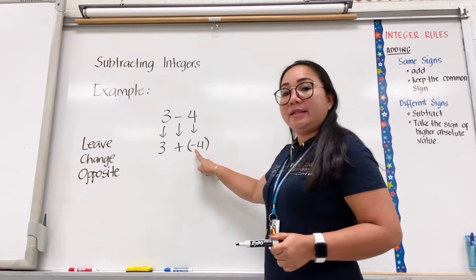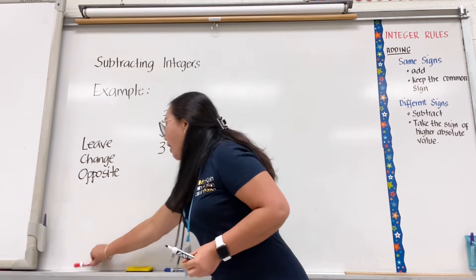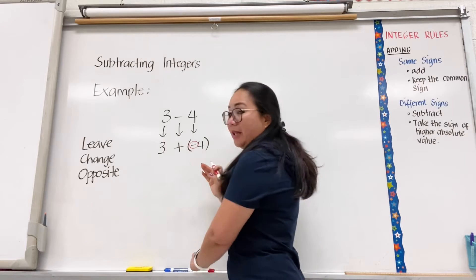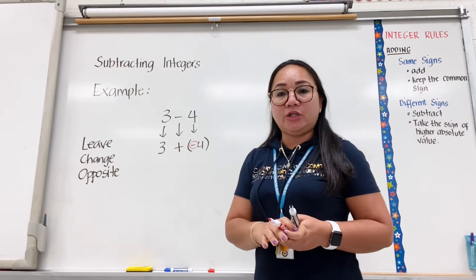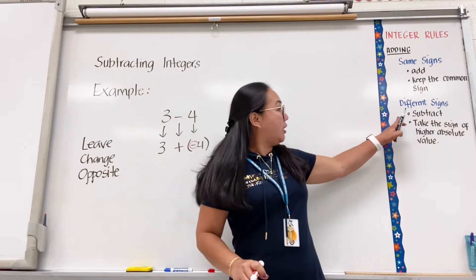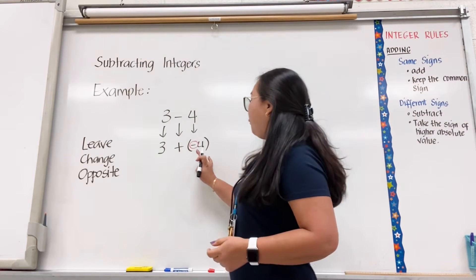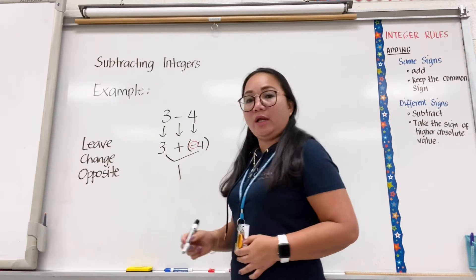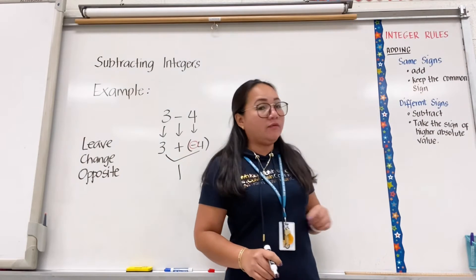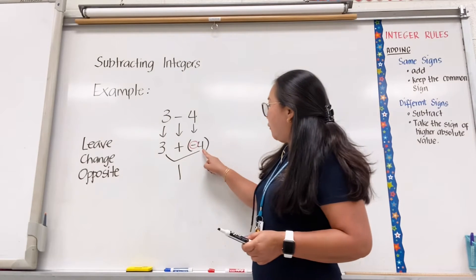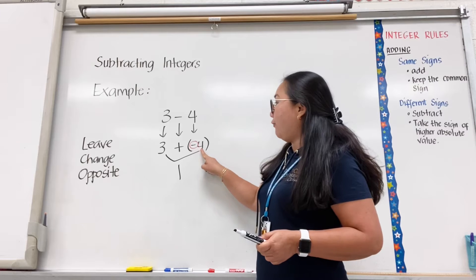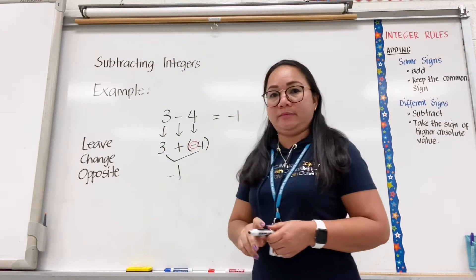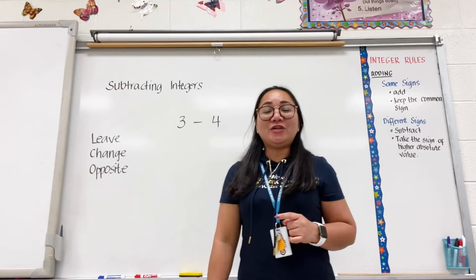We have here 3 plus negative 4. One is negative and one is positive, so they are integers of different signs. That means you will subtract: 4 minus 3 is 1. Then take the sign of the higher absolute value — 4 is higher than 3, so take the sign of 4, which is negative. So the answer is negative 1.